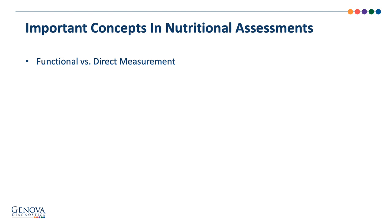There are several important concepts to be aware of when discussing different types of nutritional assessment. First, there is the difference between a functional versus a direct measurement. A direct measurement looks at how much of a nutrient can be measured in a sample — for example, a serum B12 or an RBC folate. A functional analysis identifies the cellular needs for nutrients by taking into account numerous biochemical pathways dependent on that nutrient. For example, the organic acid methylmalonic acid is created when there is low availability or utilization of B12 within the cell, making it a better indicator of vitamin B12 need. The NutriVal and Metabolomics Plus identify nutrient insufficiency based on the evidence of needs within the cell.